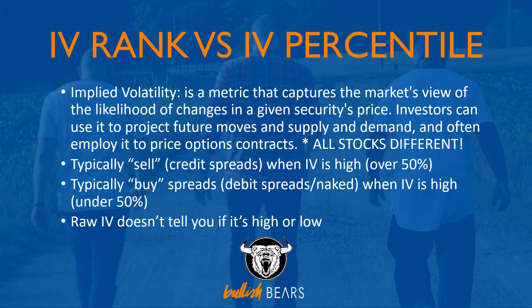Typically, when implied volatility is above 50% in general, you might look to be more of an option seller. When it's below 50%, that's when you look at buying strategies. But again, raw IV or implied volatility does not tell you if it's high or low for that particular stock.